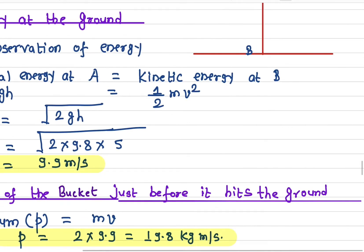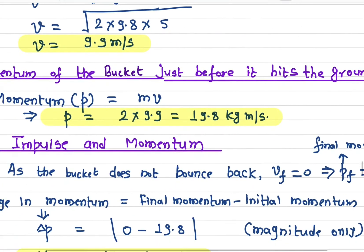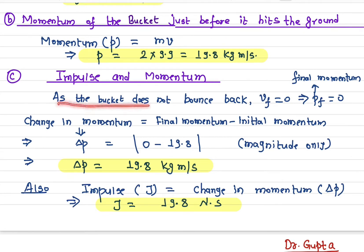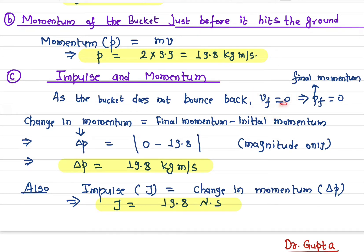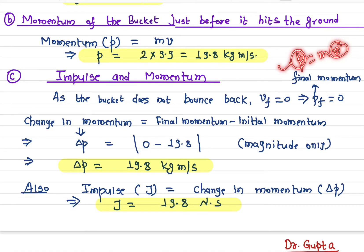Once the bucket hits the ground, it does not bounce back, so the final velocity is zero. Since momentum is defined as mass times velocity, and the final velocity is zero, the final momentum of the bucket is also zero.